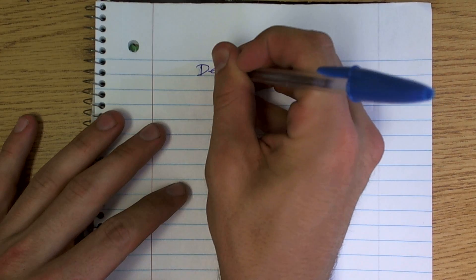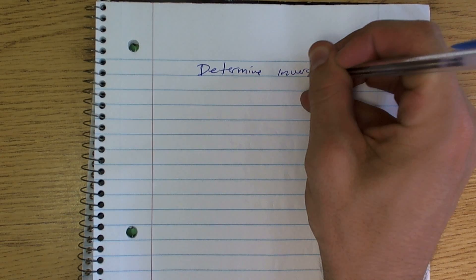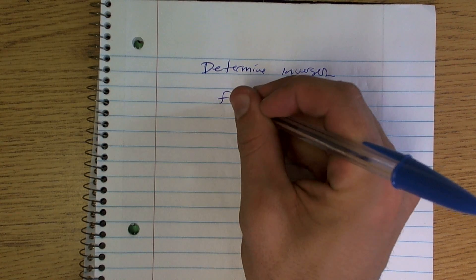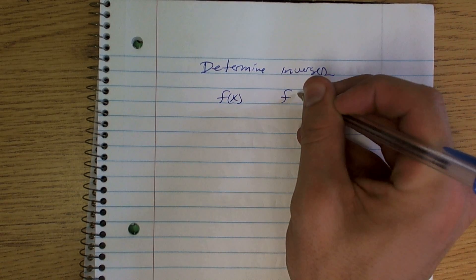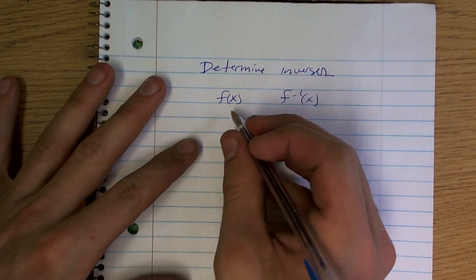We need to determine inverses. When you're determining inverses, you just got to remember that if you take f, if you have f of x and you have f inverse of x, remember that when we're determining our inverses...